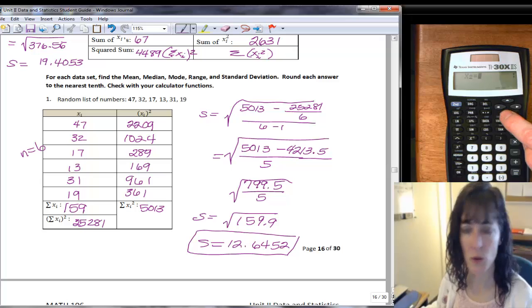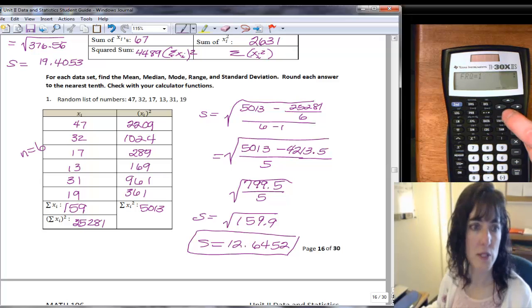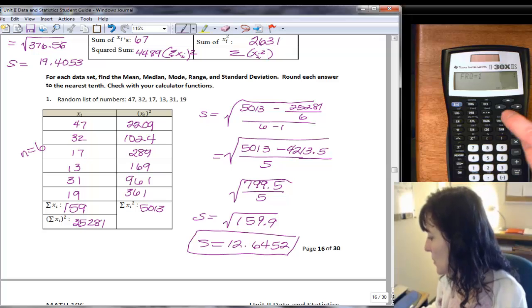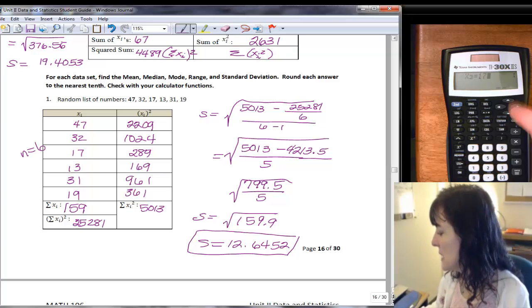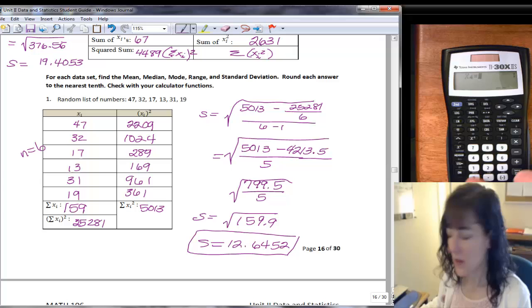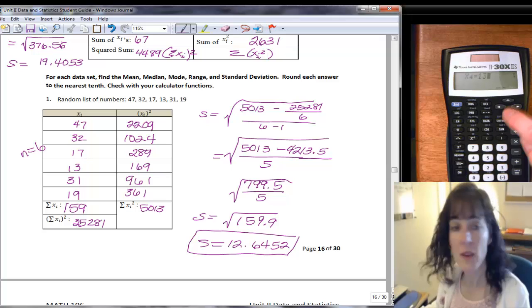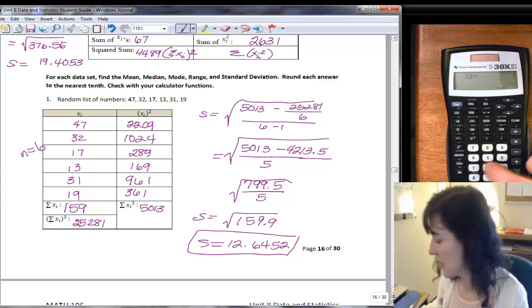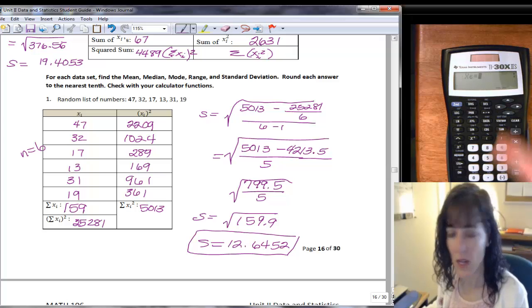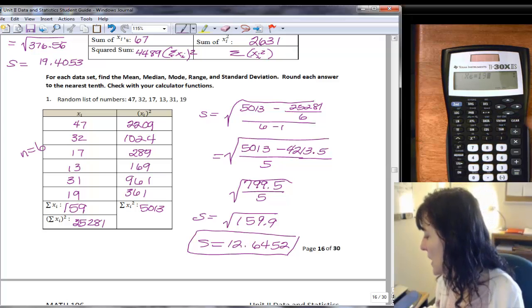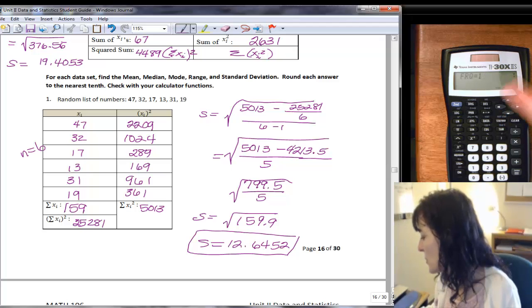Now it says x sub 2, and so I'll type in the 32, and go down, and then frequency 1, and then 17, down, down, and then 13, down, down, and then 31, down, down. And then 19, and now it's saying frequency 1, and then I can just push stat var.